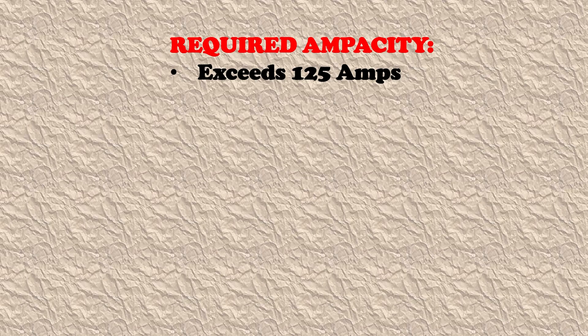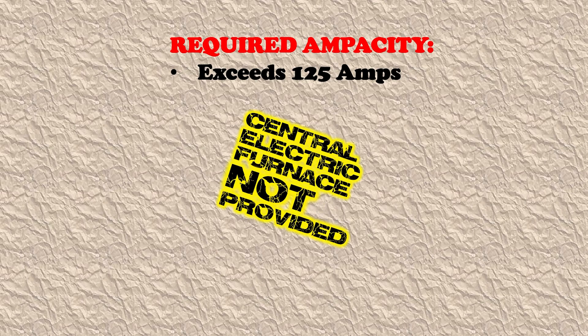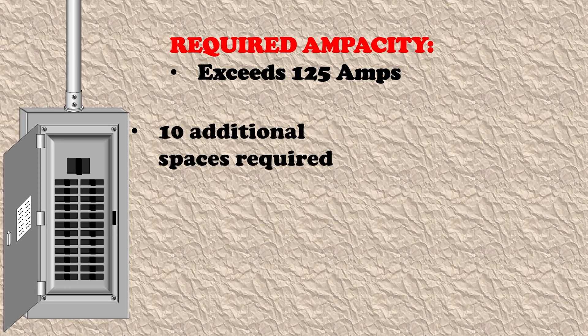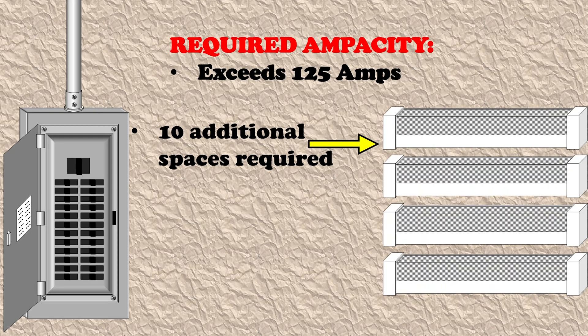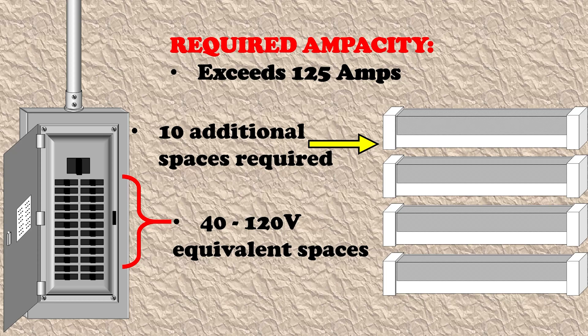Our final example: we exceed 125 amps and a central electric furnace is not provided. As in the previous example where we did not have an electric furnace provided, we're going to require extra space again in the panel. Because we're above 125 amps, we're going to require an additional 10 spaces for baseboard heaters or whatever other method of heating we have that is not a central electric furnace — meaning we're taking up more panel space to heat our dwelling unit. In this case, we are required to have 40 120-volt equivalent spaces.